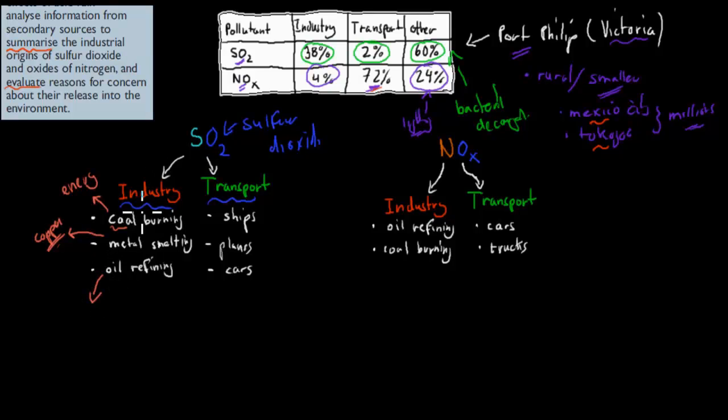And oil refining, because, as I said, oil also has a bit of that sulfur in it. So when we refine that oil, we release a bit of sulfur in the process. So oil refining, that's for making petrol, for example.